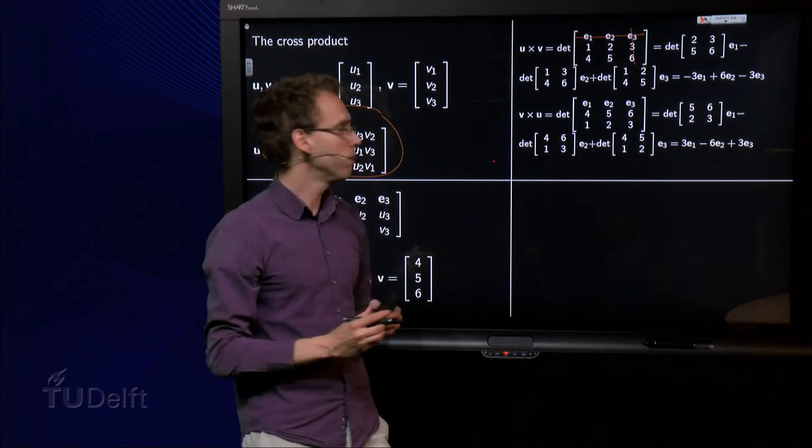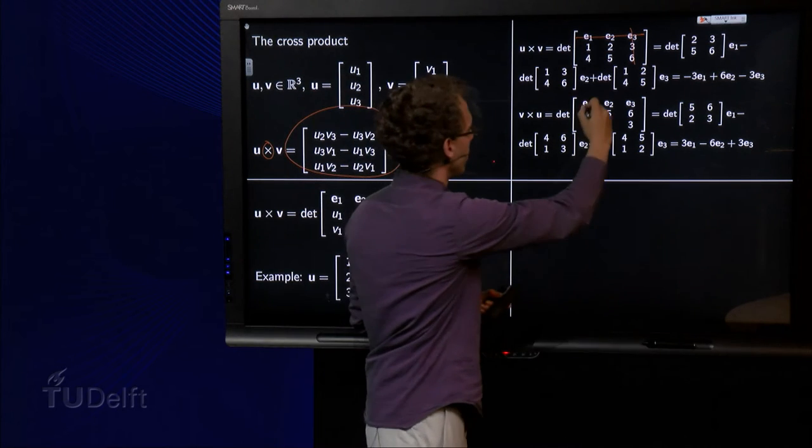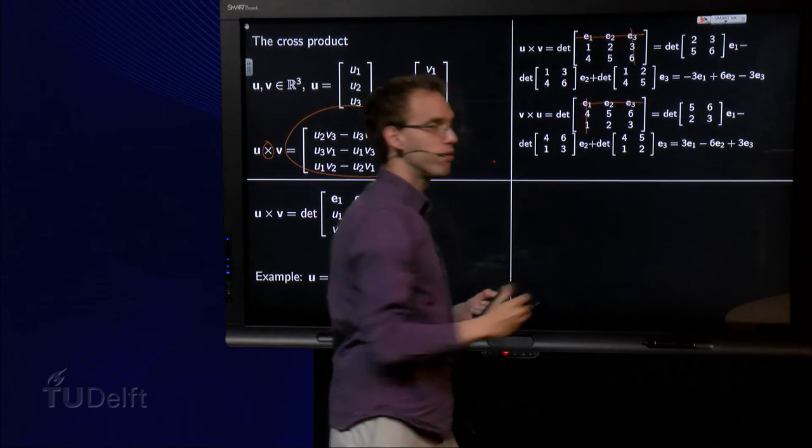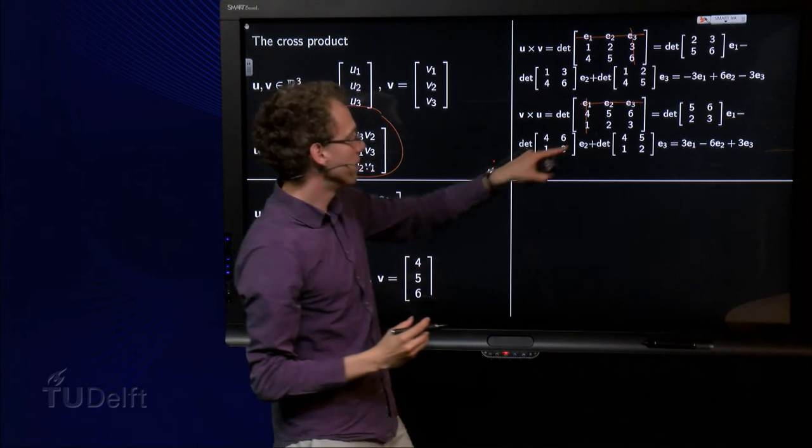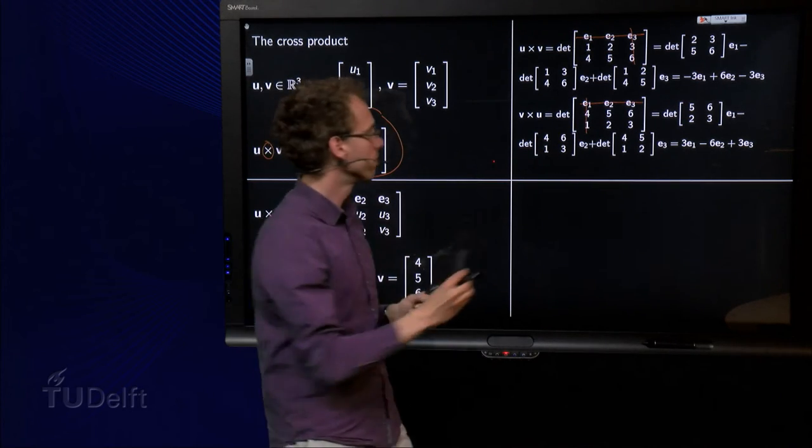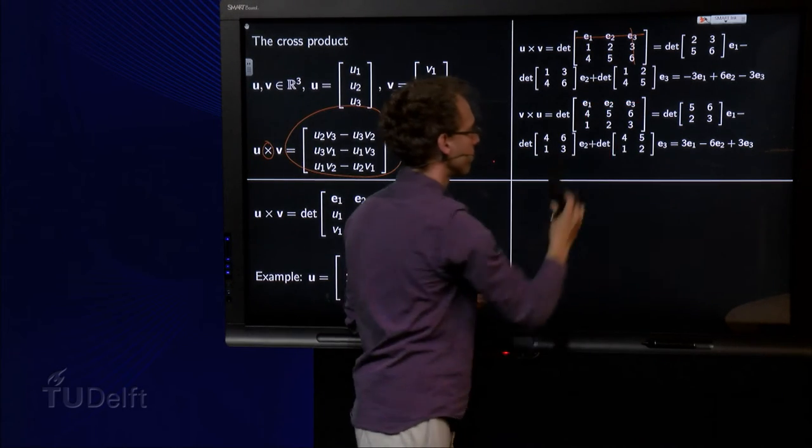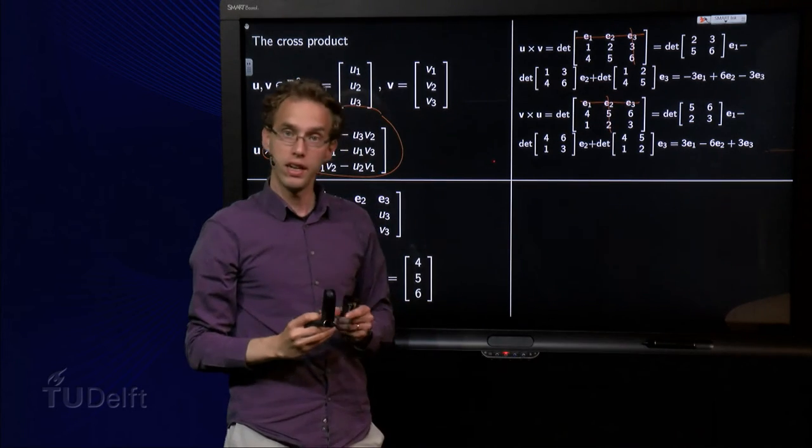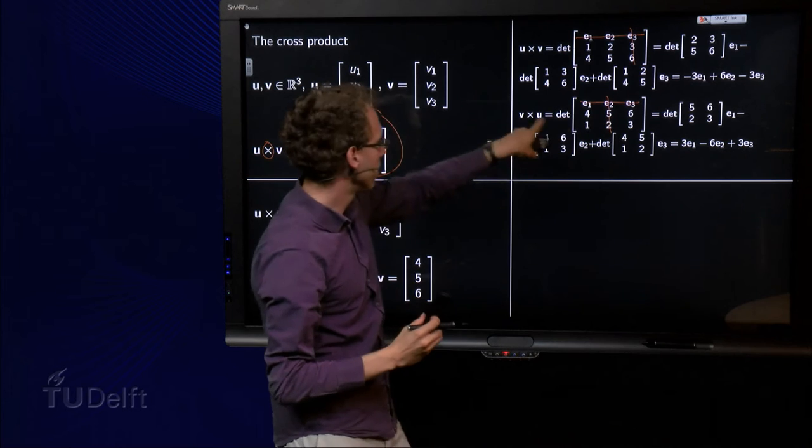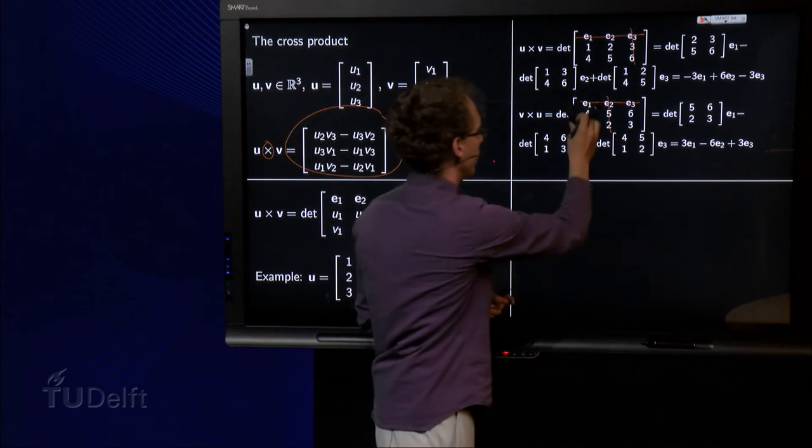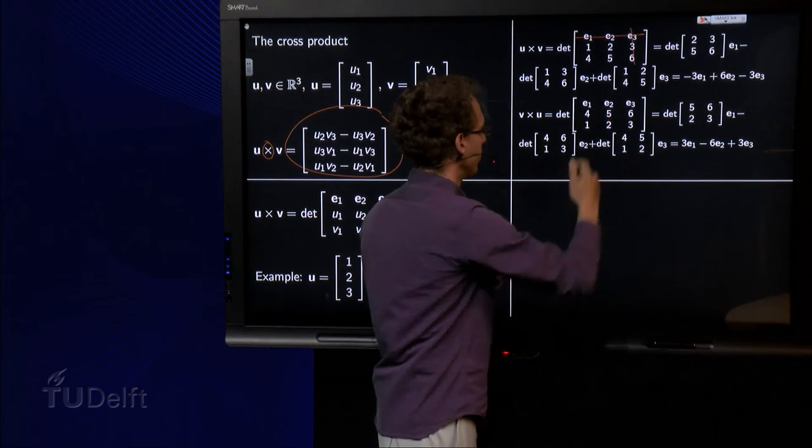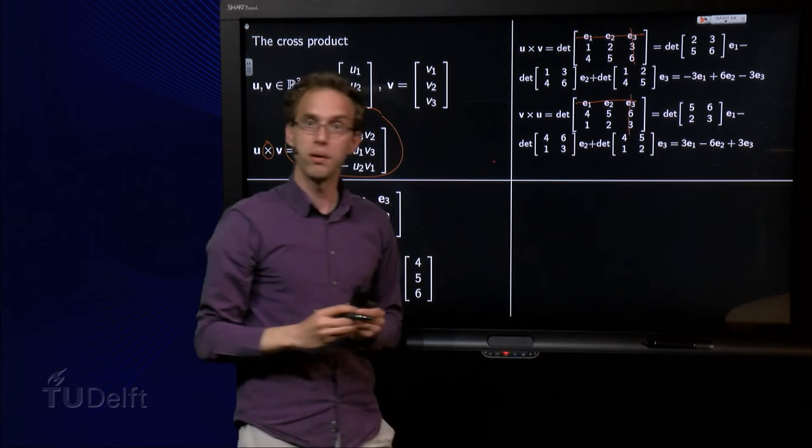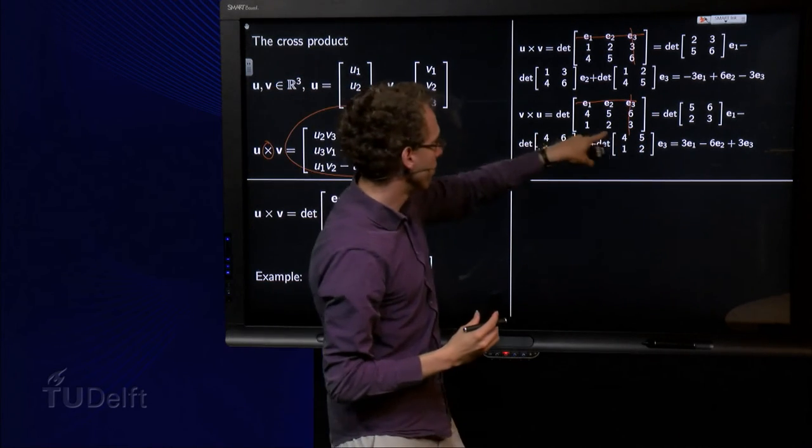Here we have v cross u. Do the same trick. Expand along the first row. We get e1 times 5, 6, 2, 3, minus e2 times 4, 6, 1, 3, and then plus e3 times the determinant of 4, 5, 1, 2.